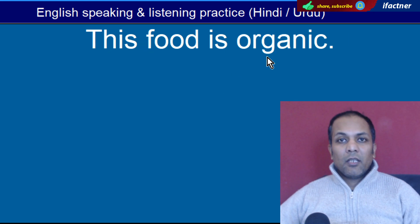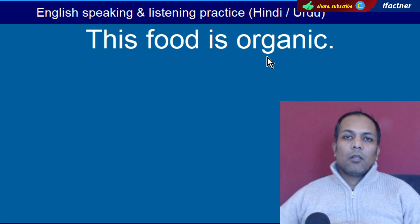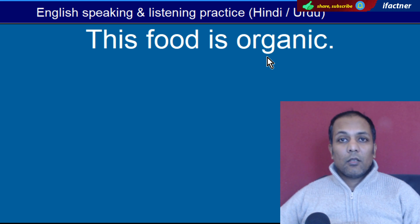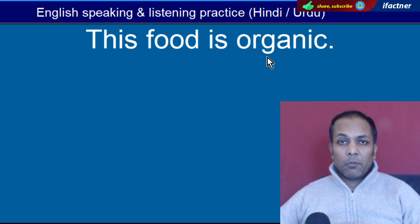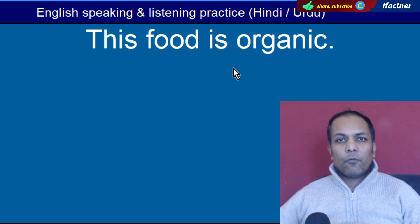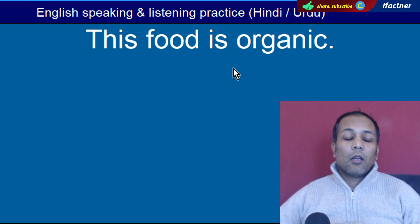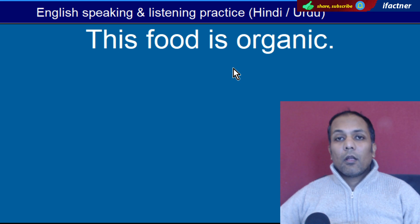Word hai 'Organic'. Organic jo hote hain woh hote hain bilkul asli. Jaise organic food hote hain jo khaad ke baghair ya artificial khadon ke baghair ugta hai. 'This food is organic' — Yeh organic food hai. 'This honey is organic' — Yeh asli shahad hai, is mein milawat nahin hai.